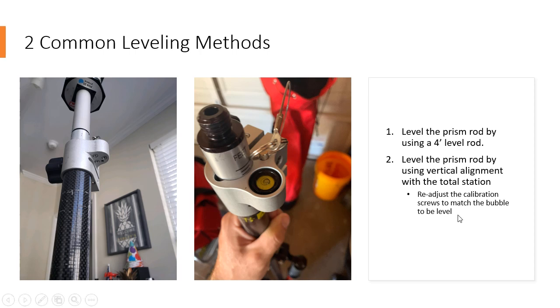Then I'll look at the prism pole, and I'll readdress the calibration screws to match the bubble. There are videos that are going to come out on both these methods if you need help, but that's essentially all you're doing - leveling the prism rod manually or some other way other than using that bubble, looking at the bubble, and then changing it accordingly.